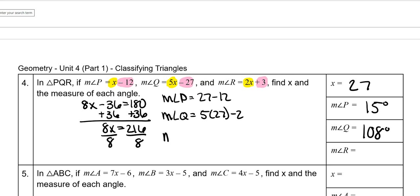And then for the measure of angle R, you could plug it in or you could also do 180 minus 108 minus 15, which is 57.